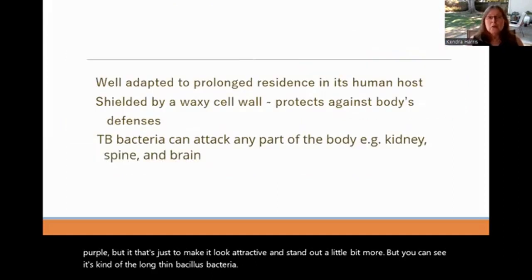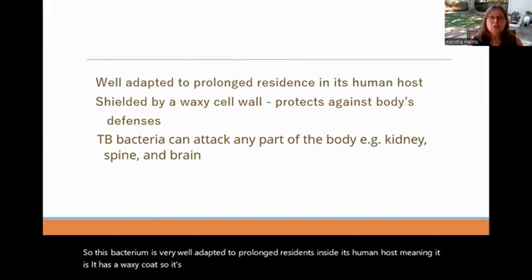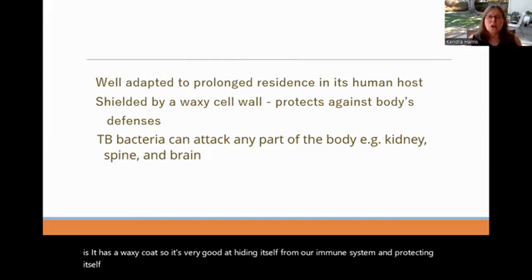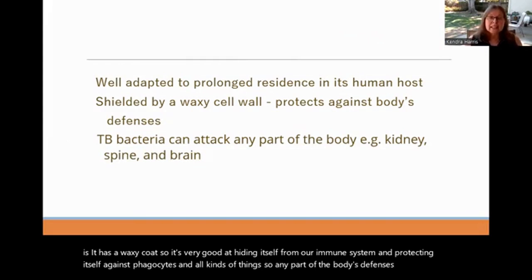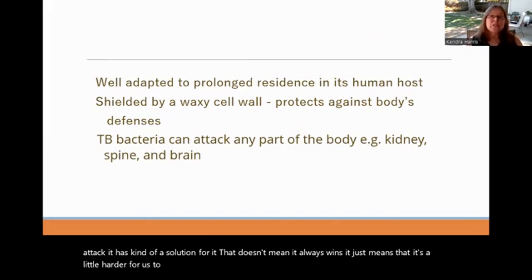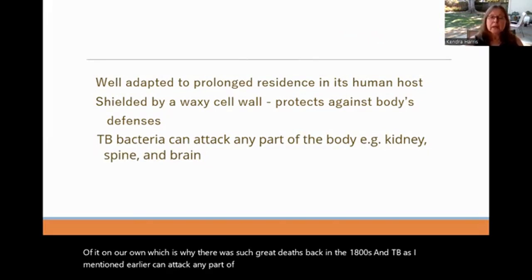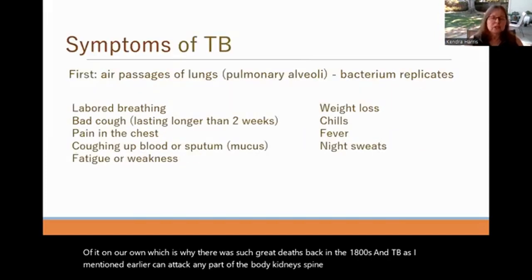This bacterium is very well adapted to prolonged residence inside its human host. It has a waxy coat, making it good at hiding from our immune system and protecting itself against phagocytes. Any part of the body's defenses that goes to attack it, it has a solution for. That doesn't mean it always wins — it just means it's harder for us to cure ourselves, which is why there were such great deaths in the 1800s. TB can attack any part of the body: kidneys, spine, brain, lungs, muscles — pretty much anything.